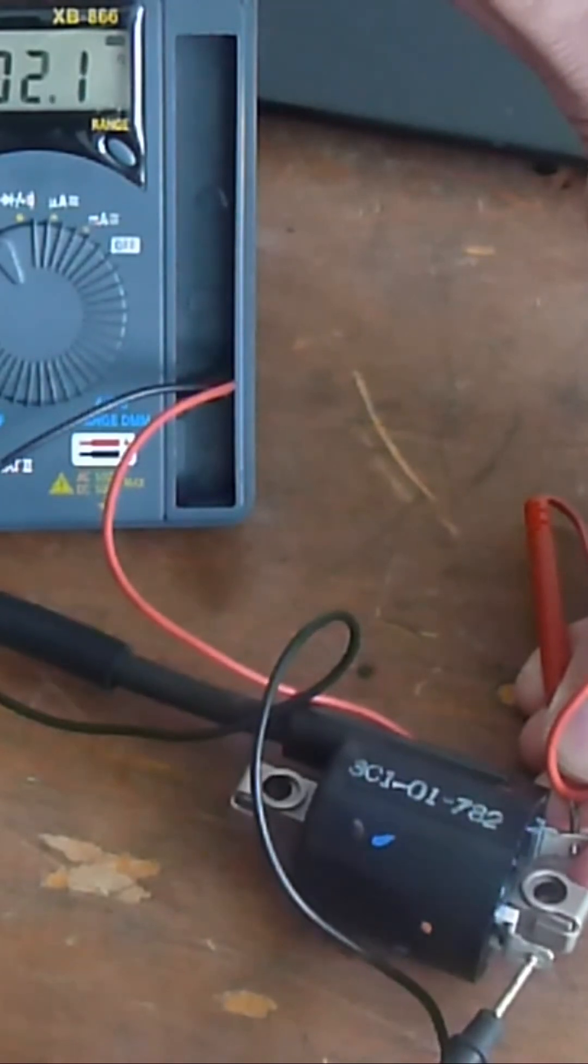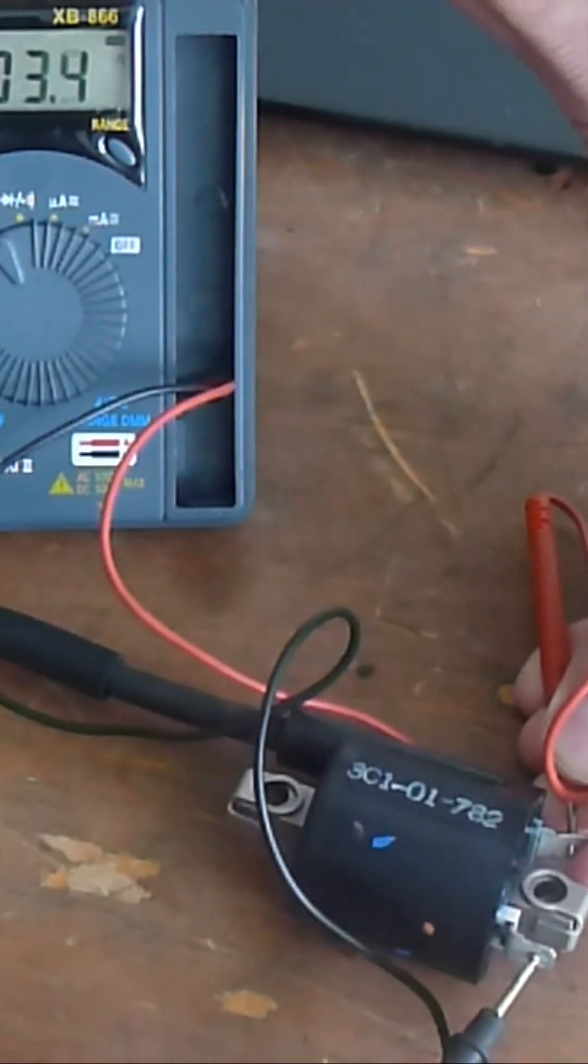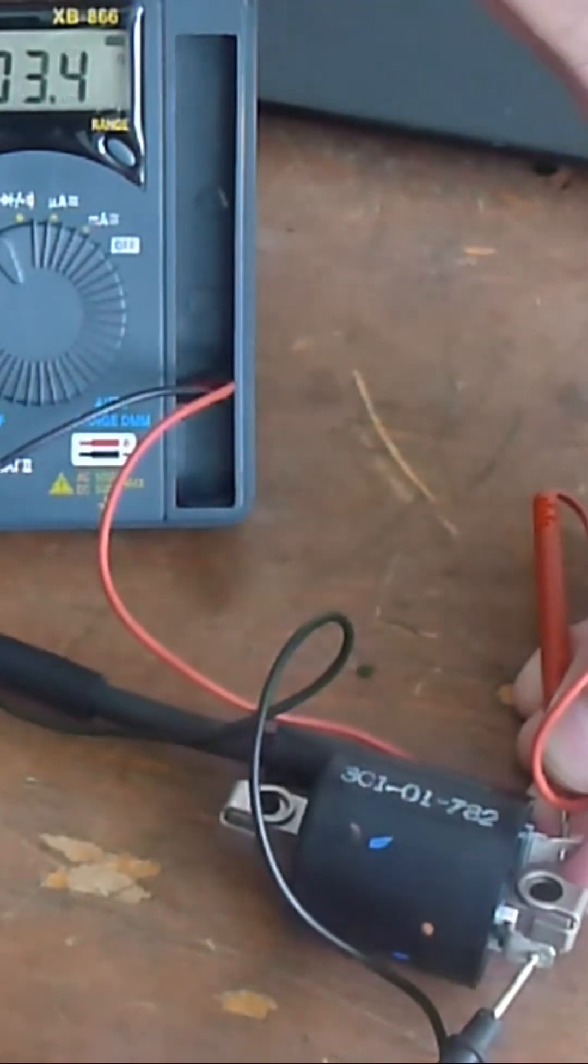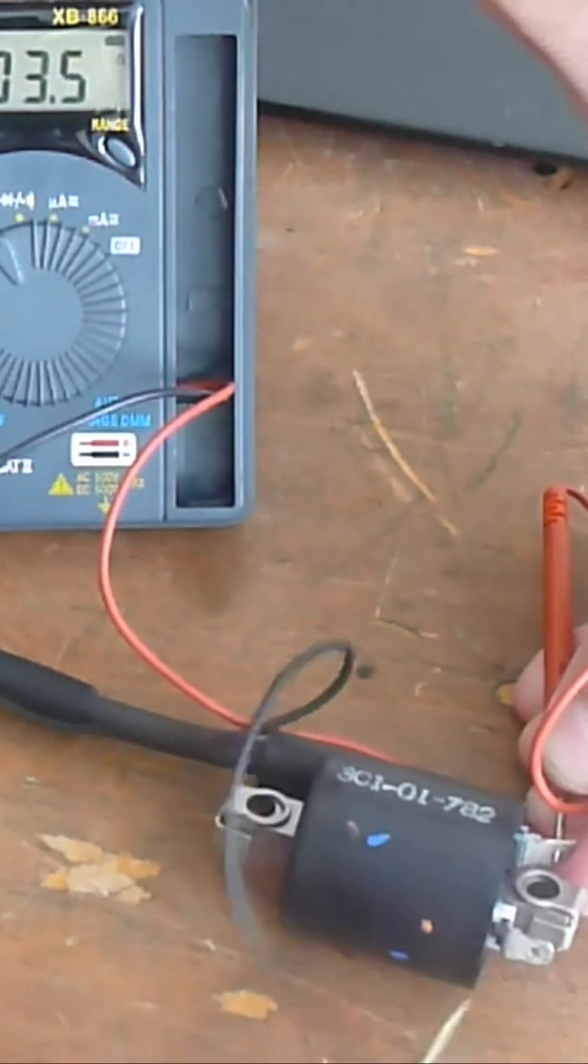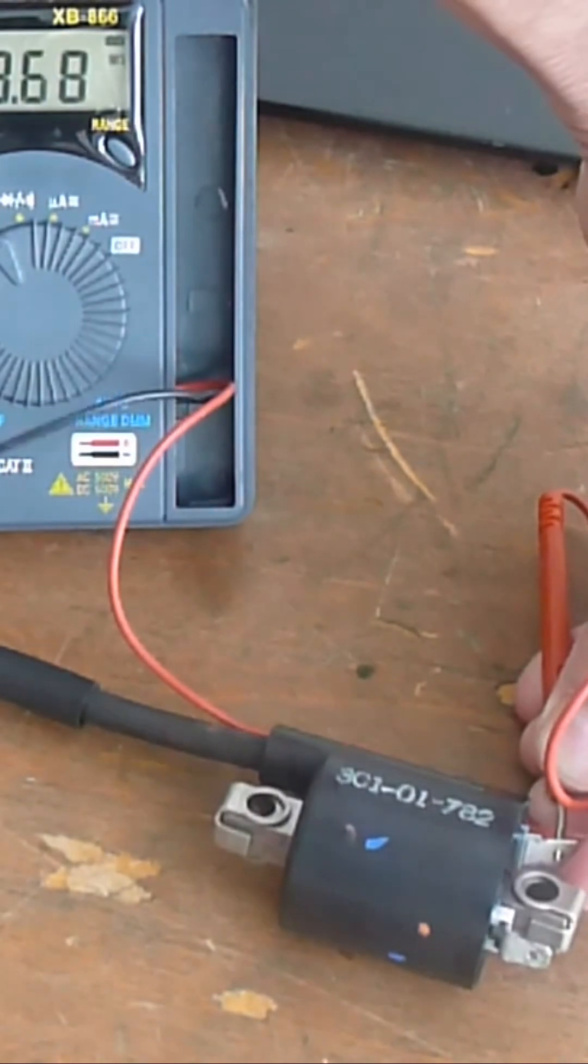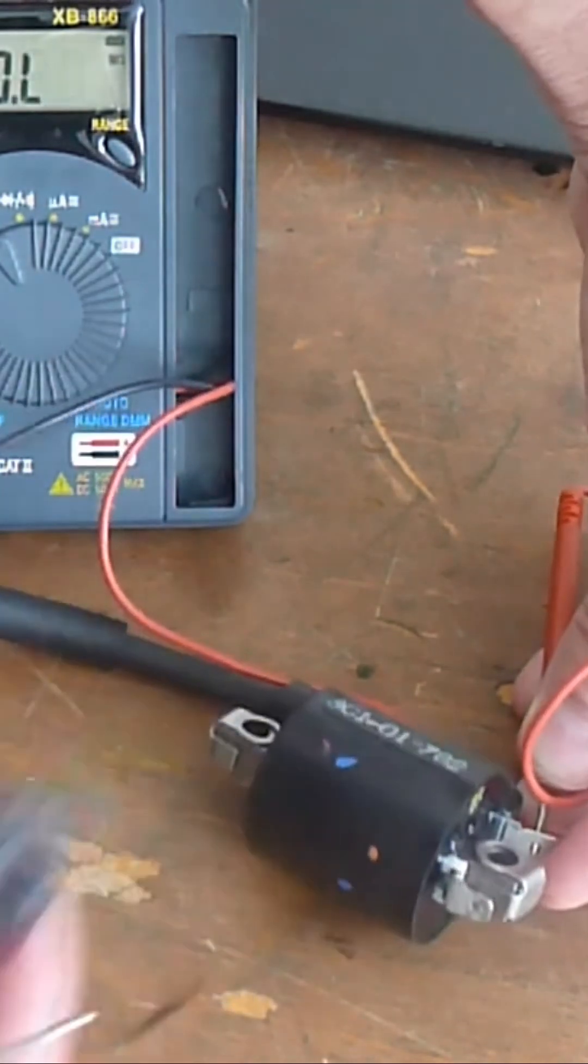So this I would presume is your primary, well it is your primary, and that is 3.5 ohms. Then keep your lead on there and put it inside your cap.